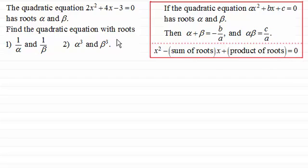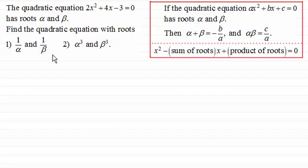Extending this, we have a question where the quadratic equation 2x squared plus 4x minus 3 equals zero has roots alpha and beta. We need to find the quadratic equation with roots one over alpha and one over beta, and then a quadratic equation with roots alpha cubed and beta cubed. Pause the video to have a go, and when you come back you can check your working against the worked solution.